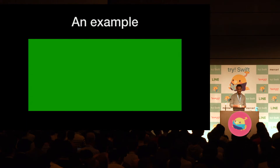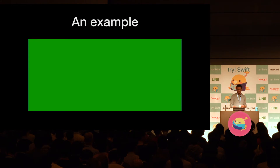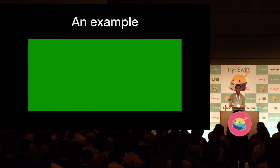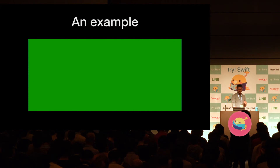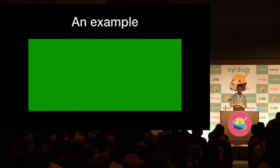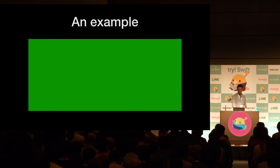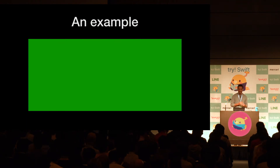For example, if our window controller managed the list of notes, the window controller can implement paste by making a new note with the pasted text. In the end, if nothing handles the message, on the Mac, our app delegate has a method called no responder for event selector. By default, this method makes your computer play that beep sound if the event is a key press. You can change this to do anything you want for unhandled messages. On iOS, nothing happens — something to look out for when you're wondering why nothing is happening when you tap on something or use an external keyboard.